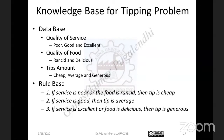For Poor, one membership function; Good, one membership function; Excellent, one membership function. Likewise for Rancid, Delicious, Cheap, Average, Generous — for every linguistic variable, you have to assign the membership function. After this process is done, the task of generating the database is completed. After that, you need to go for generating the rule base.